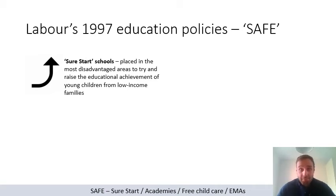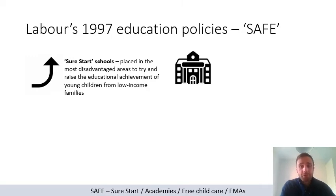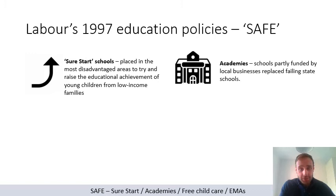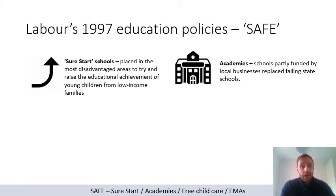The A in SAFE refers to Academies. There was another wave of academies set up — remember, academies are schools funded by local government but also partly by local businesses. These were replacing failing state schools, aiming to produce higher educational output and better-performing schools in their areas.